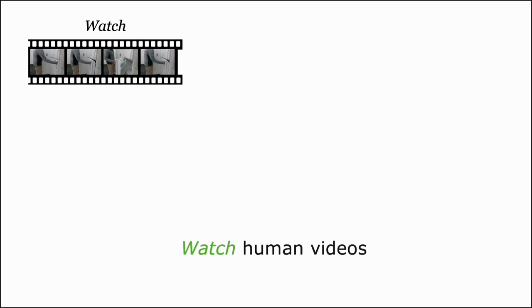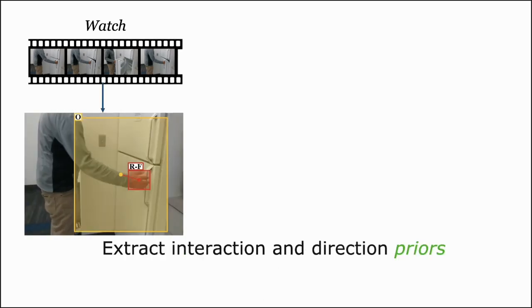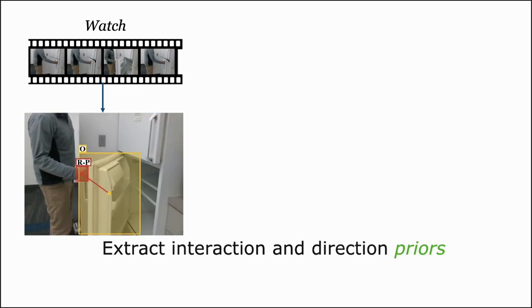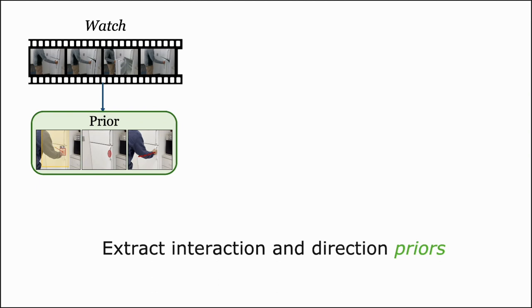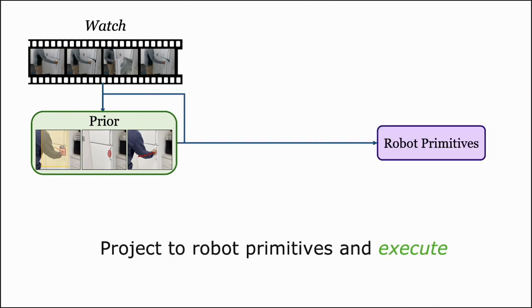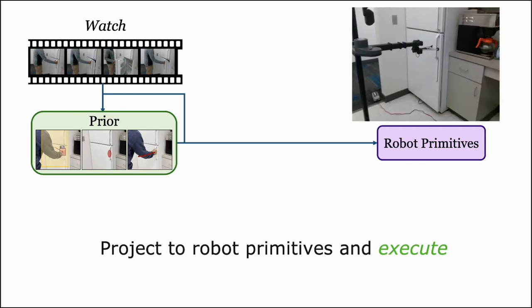Now let us see how this approach actually works. Firstly, the robot watches videos of humans performing tasks like opening a fridge. From these videos, we can extract information about hand-object interactions as well as hand motion. We call these our human behavior priors. Using simple 3D computer vision techniques, we define a mapping function to the robot's end effector.